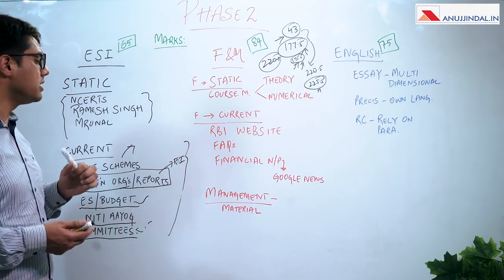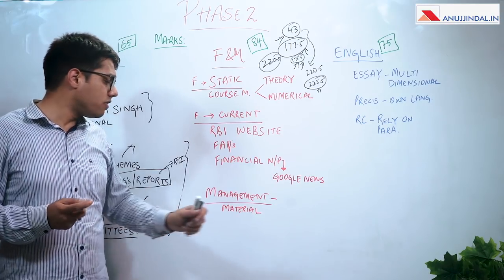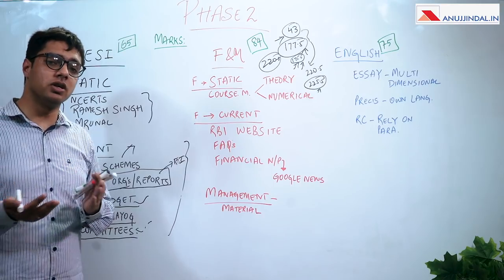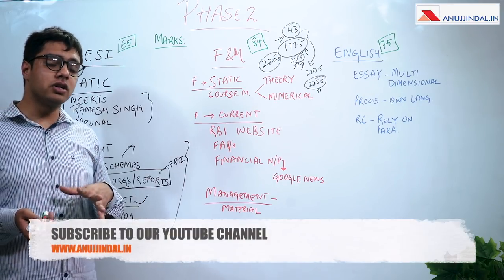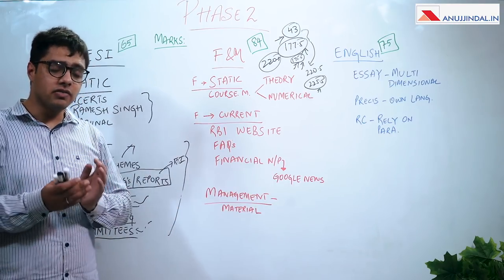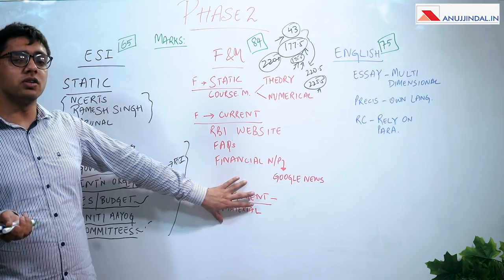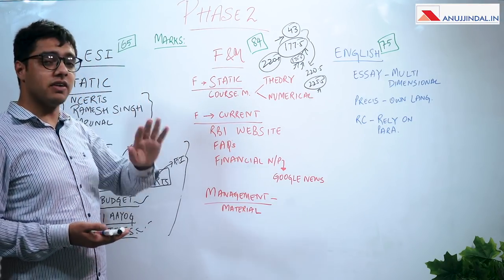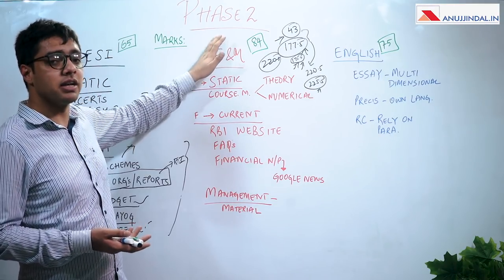Another thing in management: there are N number of theories, and the multiplicity of material means from 20 theories on leadership you might end up reading 30 or 40 theories across different materials. But what RBI is generally doing is not going into details or finding one obscure theory no coaching material has covered. The focus in management is to first limit your universe, study one basic textbook or reference, and then add two or three more theories to what you've already studied. Finance and management is a very, very scoring section — anything above 75, 77, or 80 in finance and management is a very good score.